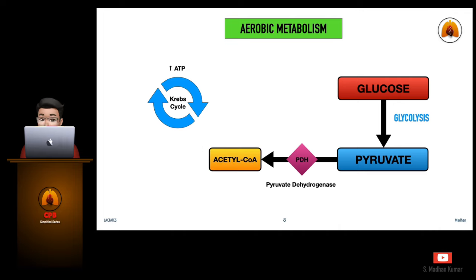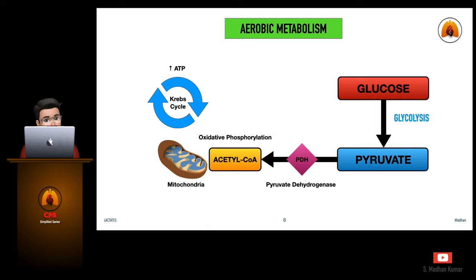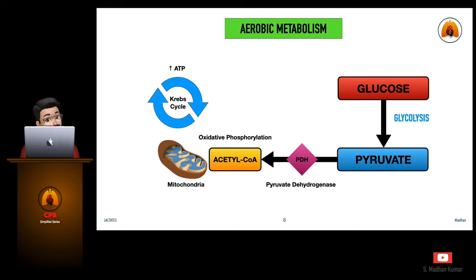Glucose gets converted to pyruvate through the process of glycolysis, and pyruvate is turned into energy in the form of ATP through different pathways. In the aerobic pathway, acetyl coenzyme A is produced with the help of the enzyme pyruvate dehydrogenase, then enters the mitochondrial pathway where, through the Krebs cycle and oxidative phosphorylation, 38 ATPs are produced.